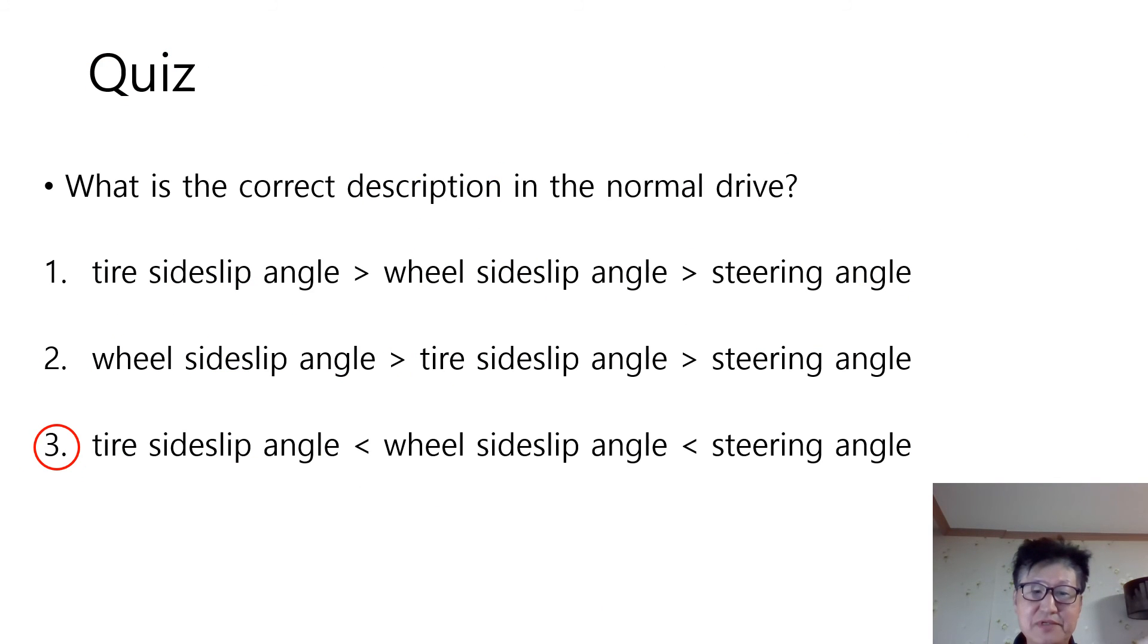It's time for answer to the quiz. What is the correct description in the normal drive? The answer is number 3. Tire side slip angle is smallest. Steering angle is biggest.